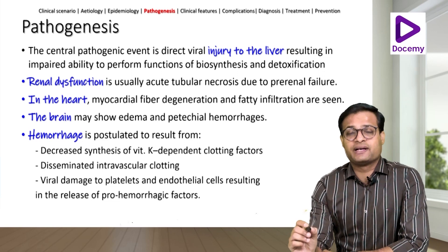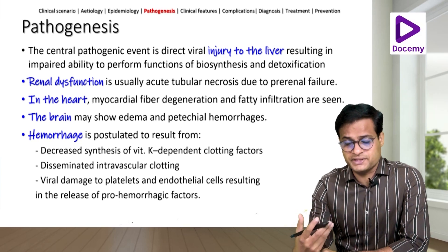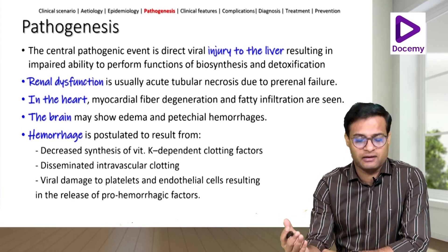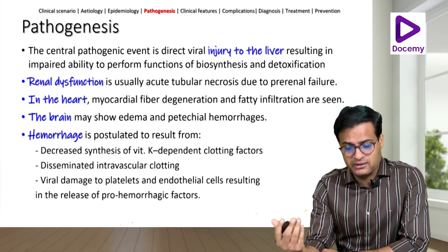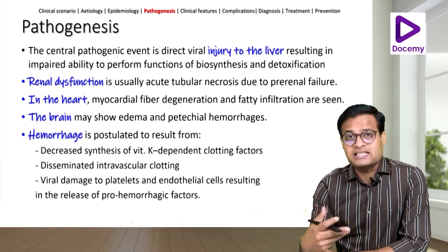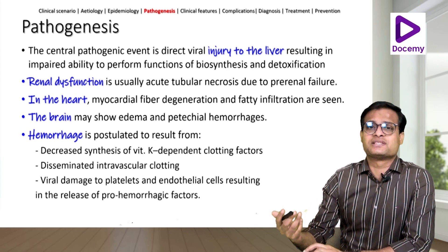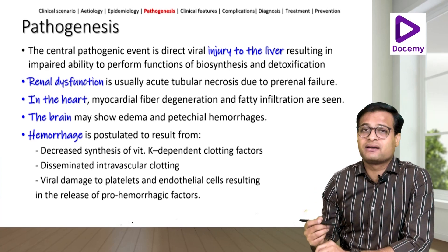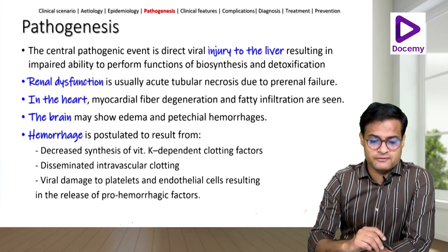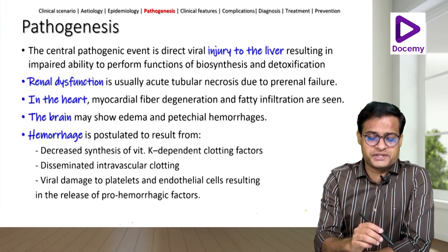Coming to pathogenesis, the central pathogenic event is direct injury of the liver by the virus, resulting in impaired liver function in both biosynthesis and detoxification. Renal dysfunction can occur in the form of acute tubular necrosis due to pre-renal failure. In the heart, there can be myocardial fiber degeneration and fatty infiltration. The brain may show edema and petechial hemorrhages. Hemorrhagic features are very severe in yellow fever, possibly due to reduced vitamin K-dependent clotting factors, disseminated intravascular coagulation, and viral damage of platelets and endothelial cells resulting in pro-hemorrhagic factors.